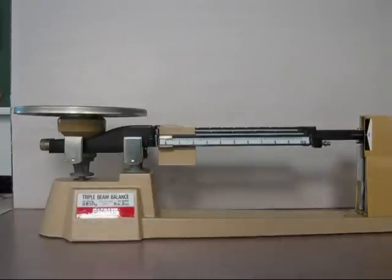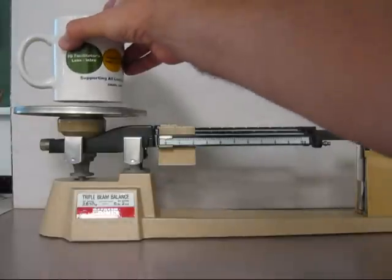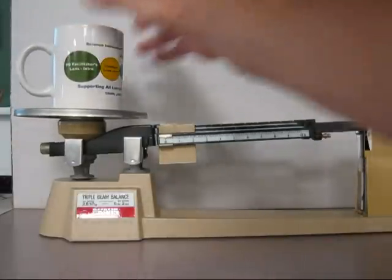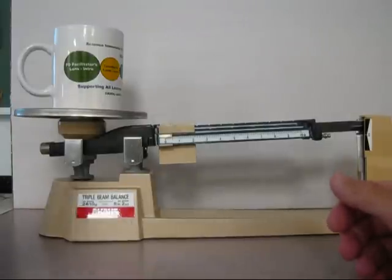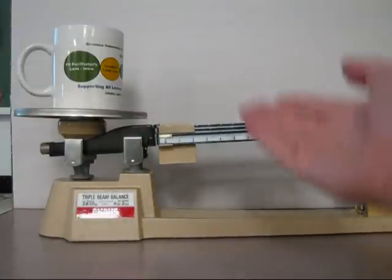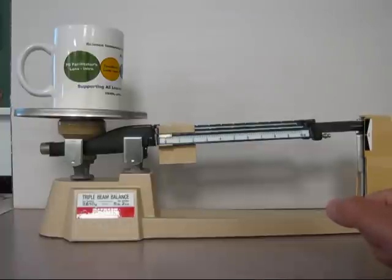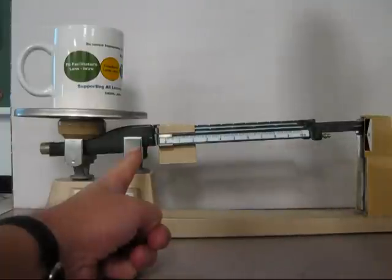I take the object that I want to check the mass of, my coffee cup here, put it on the pan carefully, and obviously it's heavy. So it makes the pan heavier than the arm, and since this is a balance, the arm goes up.